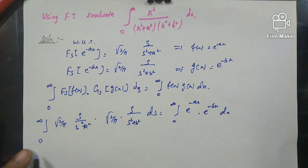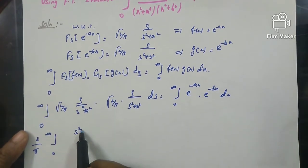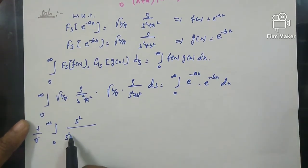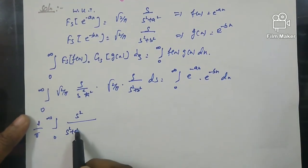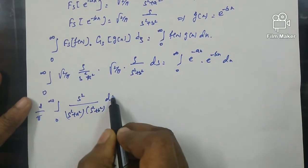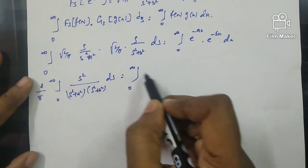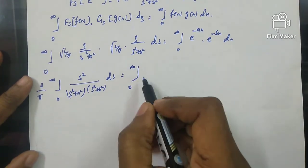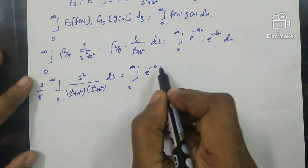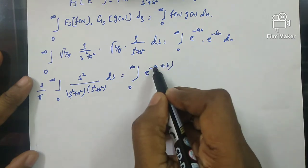Multiplying both sides and simplifying, (2/π) times the integral from 0 to infinity of s² divided by (s² + a²)(s² + b²) ds equals the integral from 0 to infinity of e^(−(a+b)x) dx.